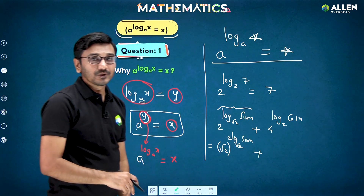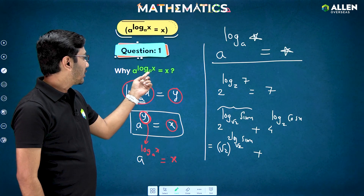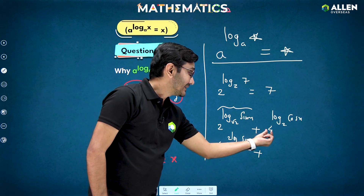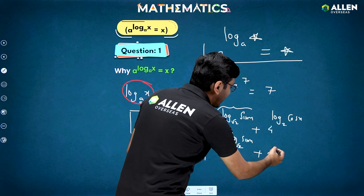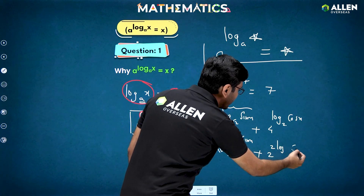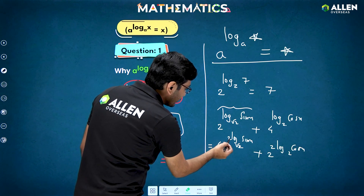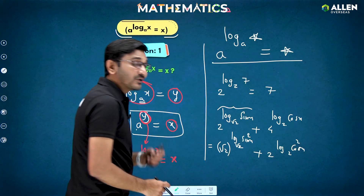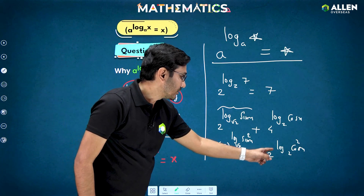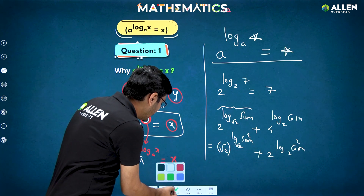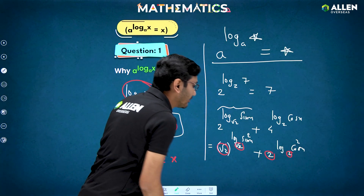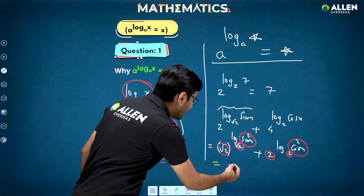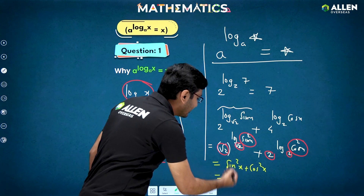Here we have 4 and 2 which are not matching. We learned a formula where the base a and base of log both match, and then the answer is x. Here 2 and root 2 are not matching, so I adjusted this base in terms of root 2. I will also adjust 4 in terms of 2, writing it as 2 squared. Then I take the 2 as a power of sin x, getting sin squared x, and similarly take the 2 as a power of cos x, getting cos squared x. Now root 2 and root 2 match, and 2 and 2 match, so the final answer is sin²x + cos²x, which equals 1.